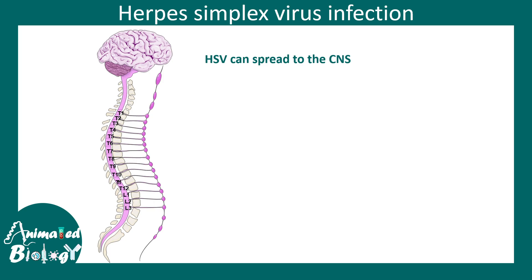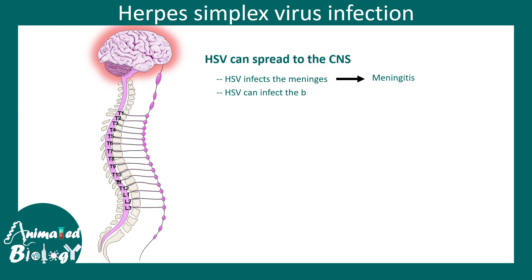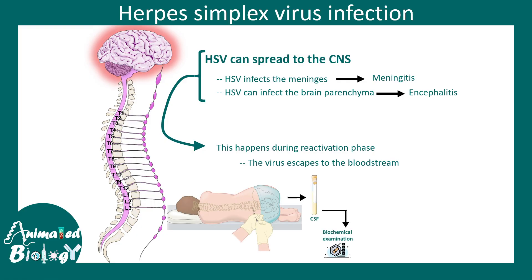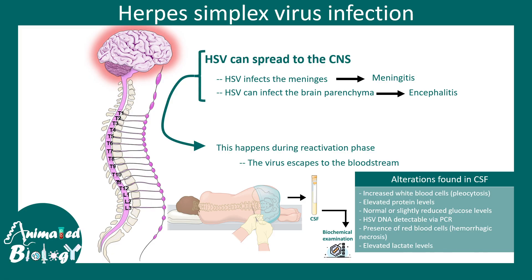Herpes simplex virus can spread to the CNS and lead to inflammation in the brain. The meninges can get affected causing meningitis, and the brain parenchyma can get inflamed causing encephalitis — both occurring during the reactivation phase. CSF examination is a good diagnostic tool for CNS infection. Characteristic CSF alterations include increased white blood cells, elevated protein levels, increased red blood cells, and elevated lactate levels.